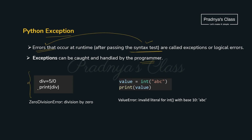Look at this example — the syntax is perfectly fine, but we are trying to divide 5 by 0, which is not allowed, so you will get an exception. The name of the exception is ZeroDivisionError. In the next example, we are passing a string to the integer function — 'abc' cannot be converted to integer, so we get a ValueError because the parameter is wrong for that function.